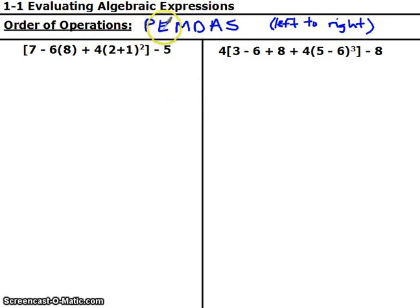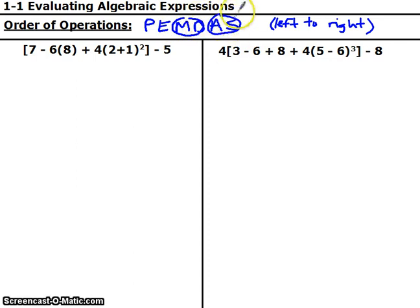E stands for exponents. M and D are kind of on the same level — you can do those in either order, but that means multiplying and dividing. Just make sure you do all your multiplying and dividing before you do any of your adding and subtracting. And it's the same deal with A and S — you can subtract before you add, those are on the same level. That's where the left-to-right rule comes into play.